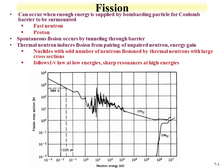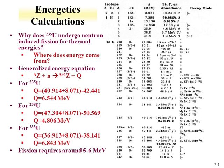Spontaneous fission is fundamentally similar to alpha decay in that tunneling through a barrier is involved. Thermal neutron-induced fission results from pairing of unpaired neutrons — that pairing produces energy which goes into the nucleus and can be useful for inducing fission. Nuclides with an odd number of neutrons can be fissioned by thermal neutrons with large cross-sections, as demonstrated for uranium-238.